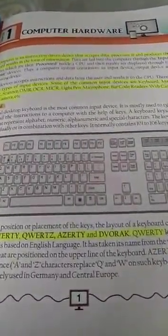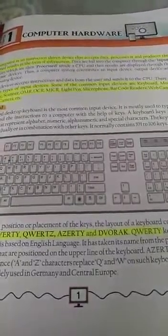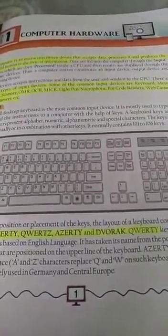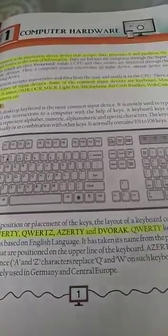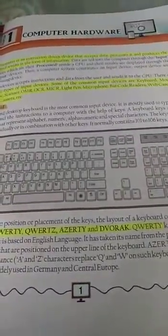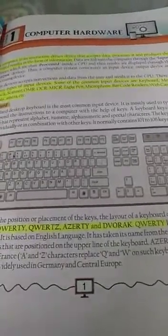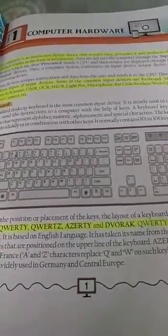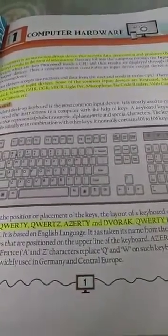It processes the data with the help of various other devices which are attached to it. It takes input, processes the data and gives it out in form of information. In this process, computer takes help of various other devices attached to it.